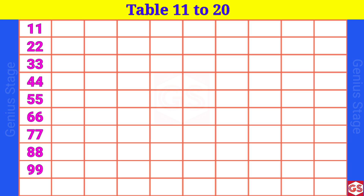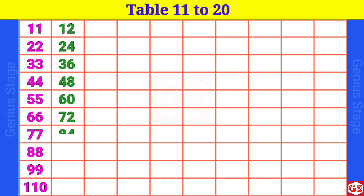11 10s are 110. 12 1s are 12, 12 2s are 24, 12 3s are 36, 12 4s are 48, 12 5s are 60, 12 6s are 72, 12 7s are 84, 12 8s are 96, 12 9s are 108.